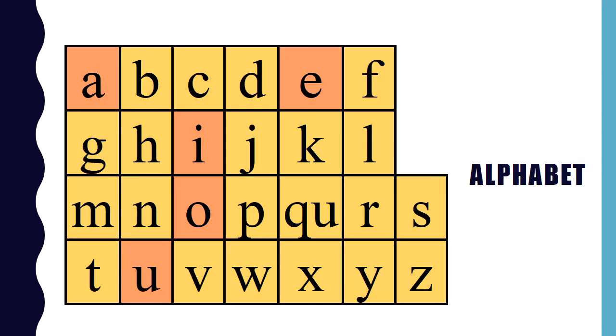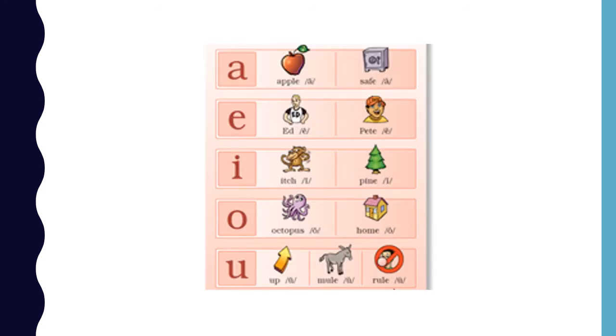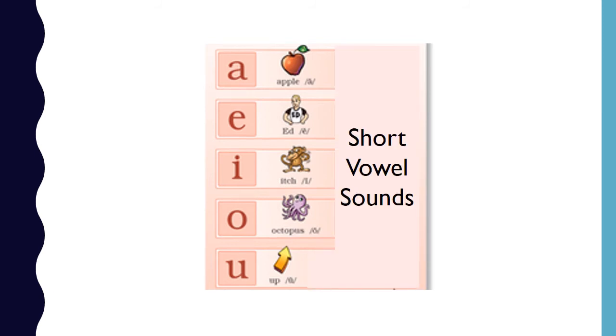The red letters in the alphabet are the vowels. Vowels have more than one sound. Today we're going to focus on the short vowel sounds.